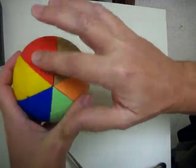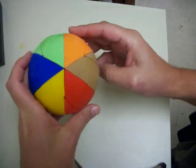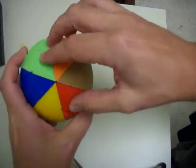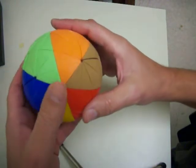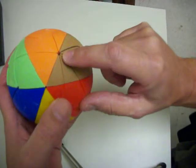But this has six different colored stripes on it. All of the stripes meet at a different vertex on the surface of the sphere.